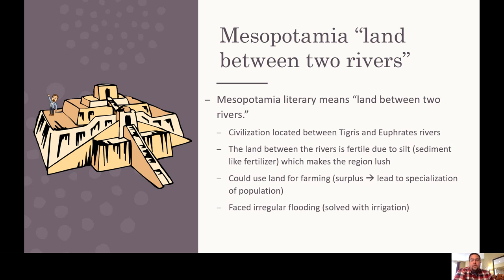Because of this easy-to-grow-food area, there ended up being a surplus of food — more food than what was needed. Because of that, people could now do other things besides farming. Before this, if you wanted to survive, you had to farm. But now you could go to the market and buy food instead of growing it yourself. So we had things like architects, merchants — all these other careers kind of developed.